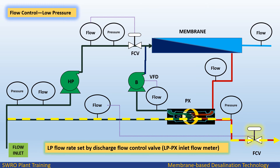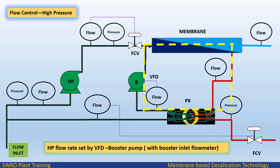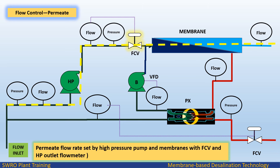RO process control — low pressure: flow rate is set by a discharge flow control valve at the brine outlet line, using the inlet LP PX flow meter set point. RO process control — high pressure: PX flow rate is set by the VFD booster pump with the booster inlet flow meter. RO process control — permeate: flow rate is set by the high pressure pump and membranes with FCV and HP outlet flow meter.